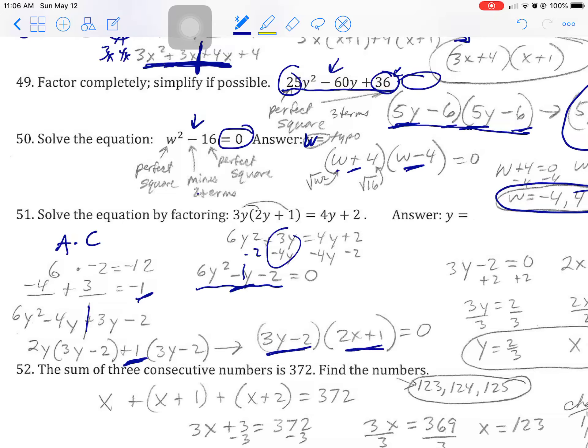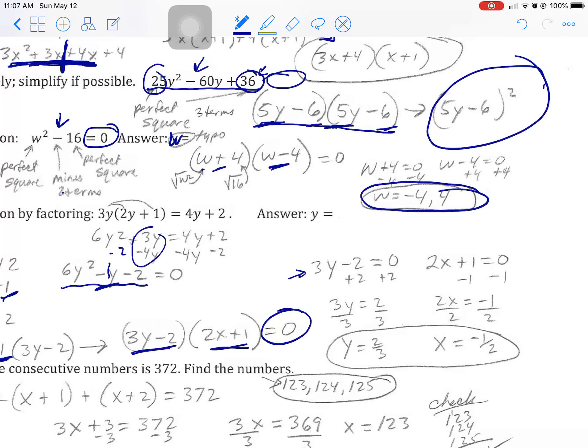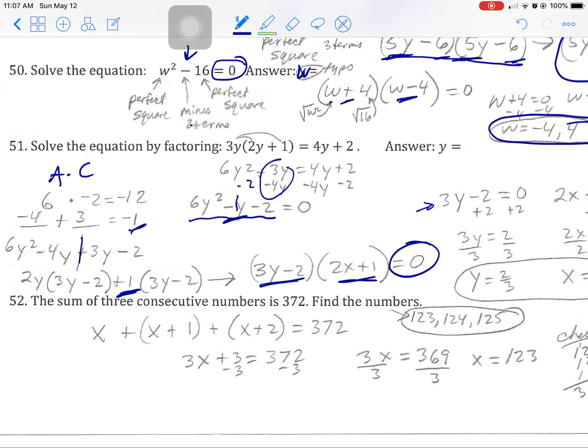So when you take out the GCF, you can put 2x plus 1. And then because it was an equation, we don't forget that it's still equal to 0. You set each factor to equal to 0. And when you run them, you're going to get some fractions. That's fine. Just stay with it. And those are your two answers to those.